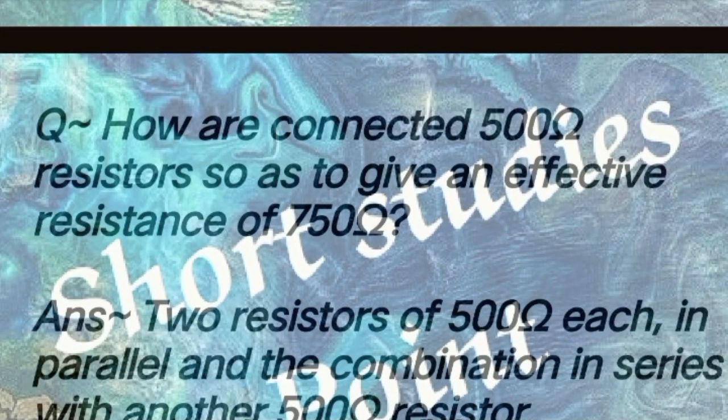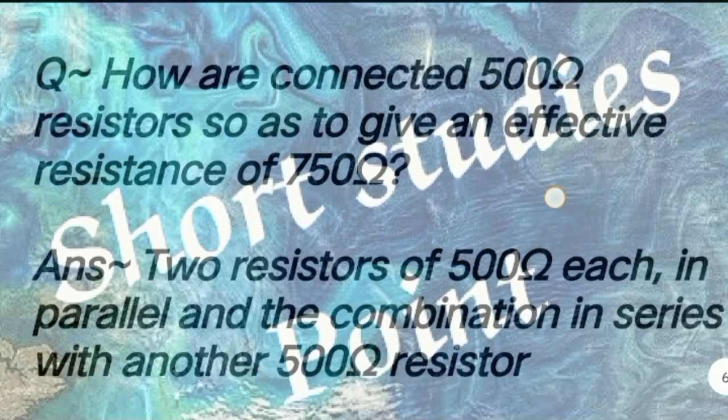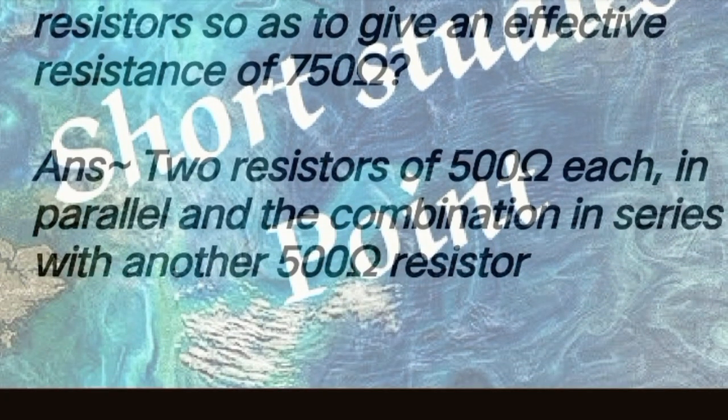Next question: How are 500 ohm resistors connected so as to give an effective resistance of 750 ohm? Answer: Connect two resistors of 500 ohm each in parallel, and the combination in series with another 500 ohm resistor.